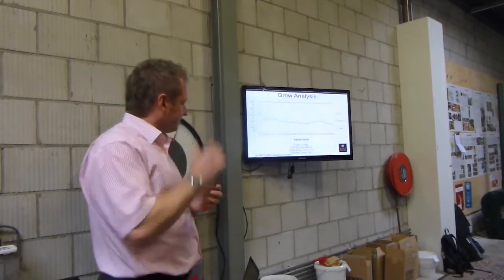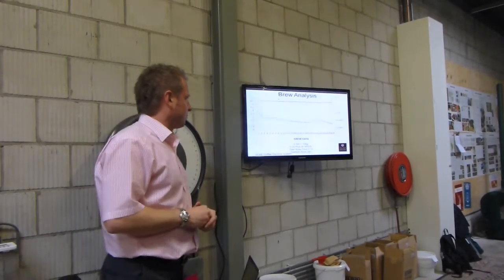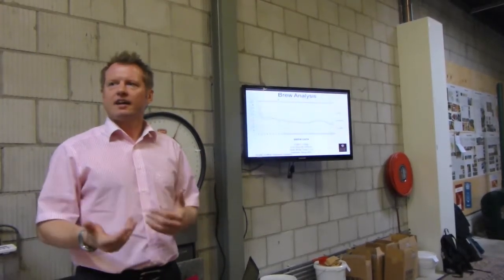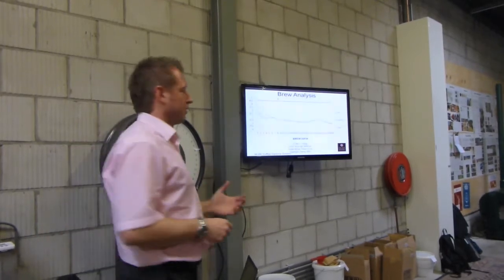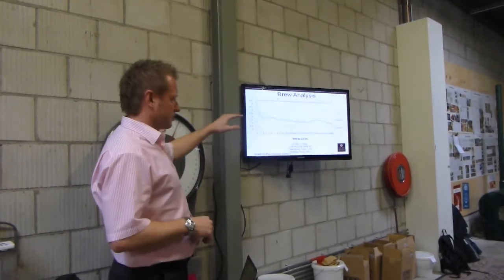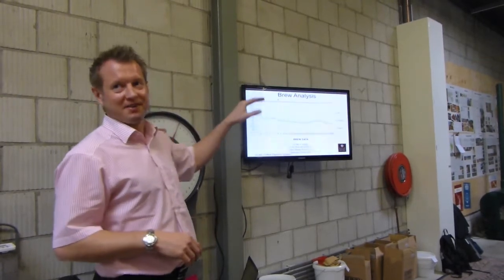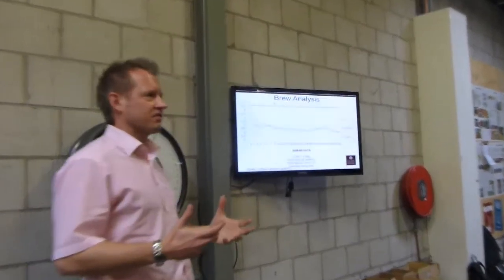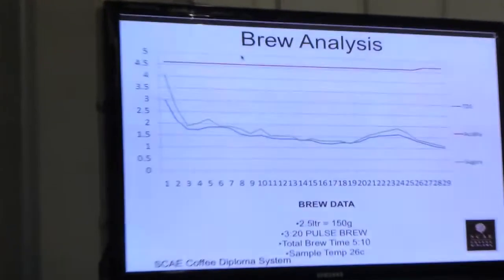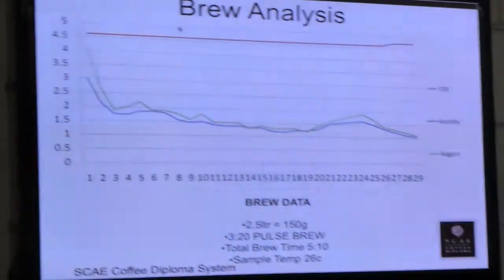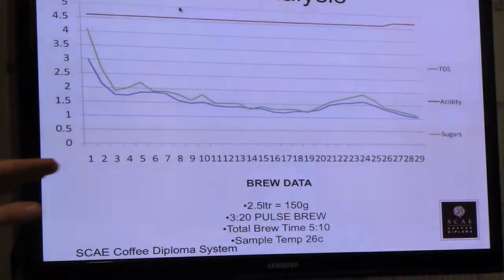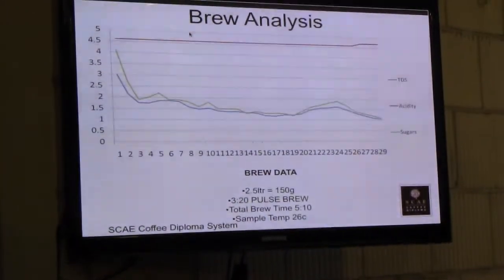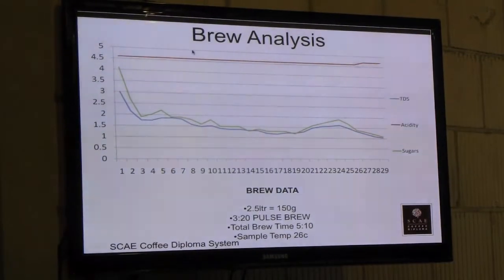What we did here is we ran a brew cycle and basically changed the brew time. So we agitated the coffee differently to find out what was pulled out through the brew basket. We measured TDS, which is the blue. I'm color blind by the way, so it may not be. TDS in blue, acidity red, Brix in green. And it was trying to look at what is extracted through the brew cycle in regards to those three elements. And we took a sample every 10 seconds for the whole cycle. This was for a 3 minutes and 20 second pulse brew.